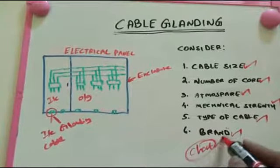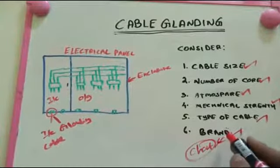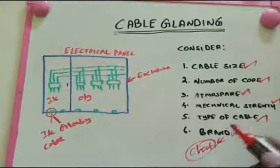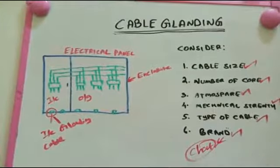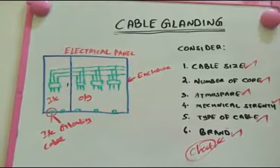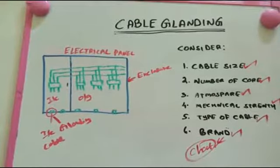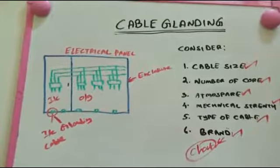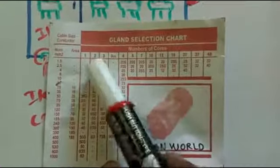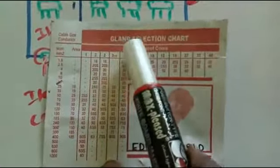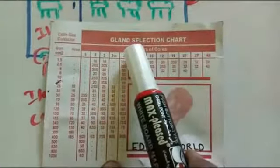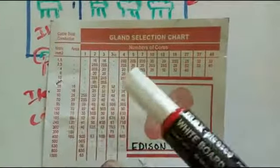After that, the cable type — aluminium or copper, whatever cable type we have. Then brand is very important, because it determines what kind of gland we are going to use. The brand provides charts, and that chart is helpful for choosing the gland size for the cable.